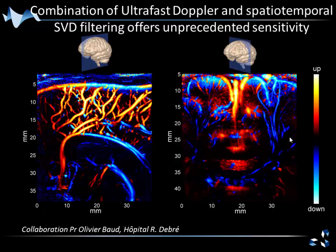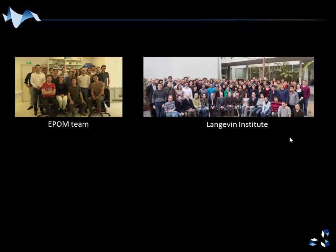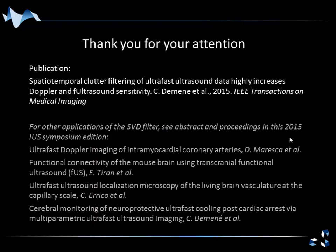In conclusion, combining ultra-fast Doppler with spatio-temporal SVD filtering offers unprecedented sensitivity, which is really important for functional applications in both small animal and clinical imaging. I would also highlight that this is not limited to brain applications — it works for many organs; we've tried kidney, liver, and even cardiac imaging, and it works well for removing motion artifacts. I would like to thank the ACS team, the medical imaging team in particular, and the IEEE committee for organizing this conference.